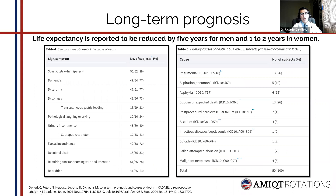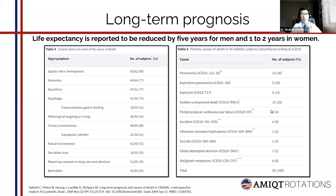In our retrospective study including 411 patients with data from patients who had passed away, life expectancy was reported to be reduced by only five years for men and two years for women. Looking at table four, the clinical status at onset of the cause of death was: over 70% presented with spastic tetra- or hemiparesis, dementia, dysarthria, dysphagia, and urinary and fecal incontinence. Table five shows the primary causes of death in 50 patients that could be verified — the most common cause being pneumonia at 36% (combining pneumonia and aspiration pneumonia), followed by sudden unexpected death at 25%.